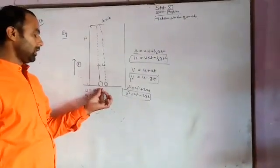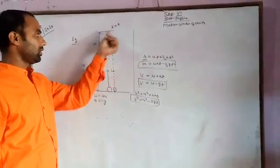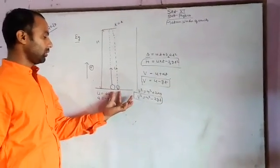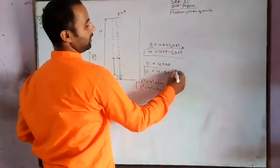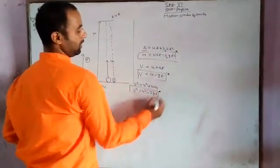Here the ball is projected with the initial velocity of u and this attains the height of h. After that this ball falls back to the ground. And this is the motion under gravity. We have to use these three equations which we are using here.